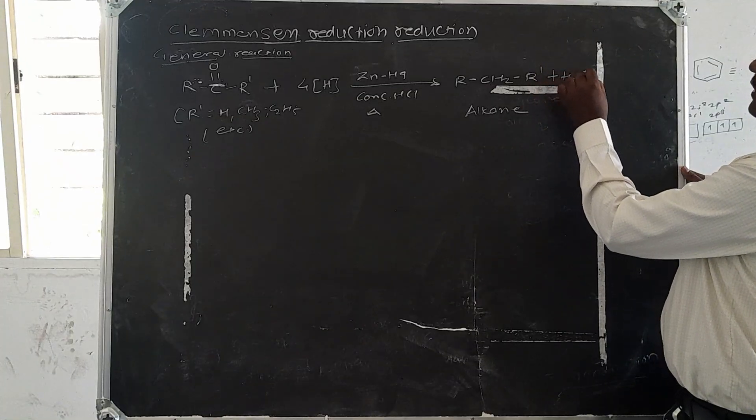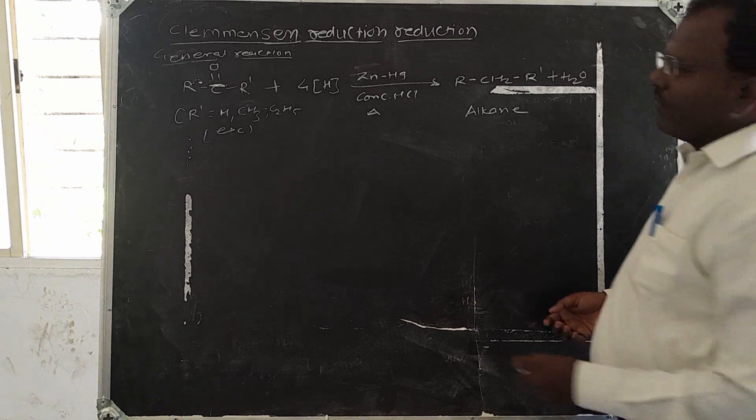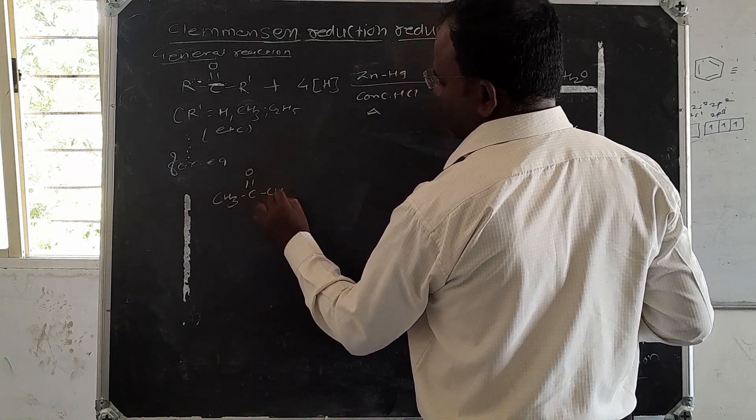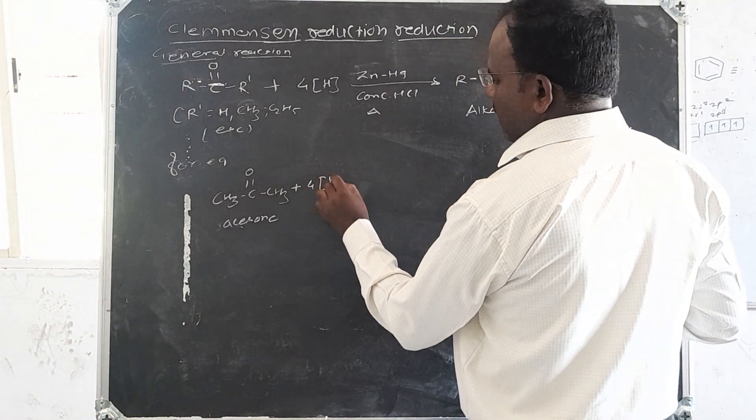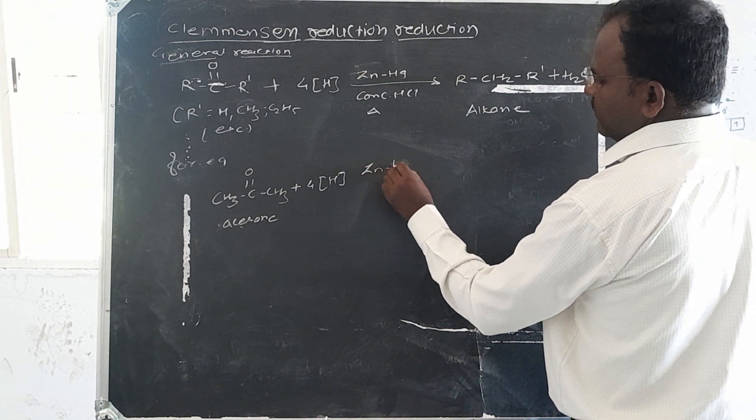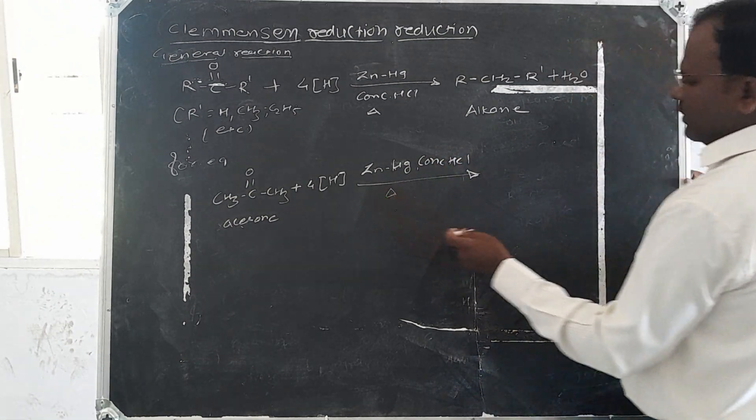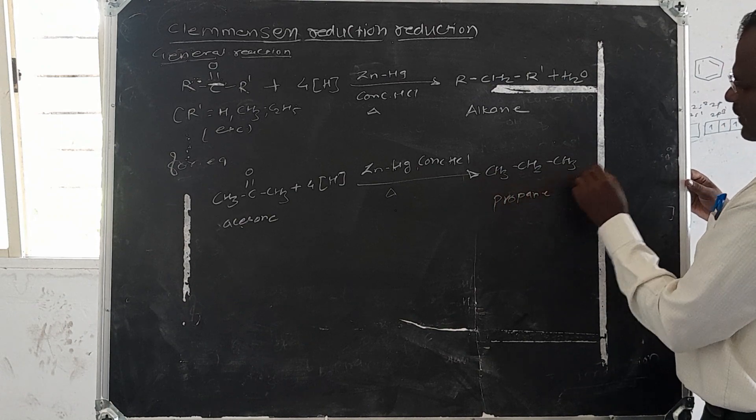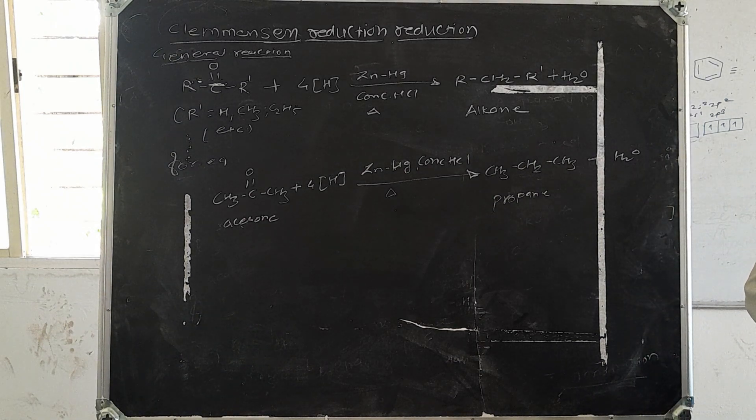For example, acetone or dimethyl ketone reacts with hydrogen in the presence of zinc amalgam. Then the formation of hydrocarbon, that is propane, is formed along with water. So this is the first case.